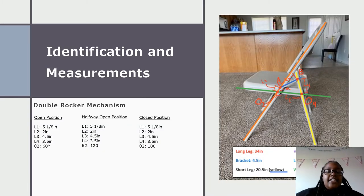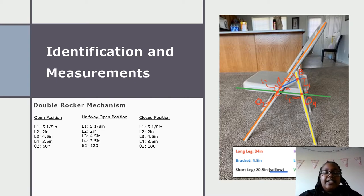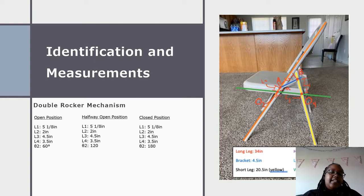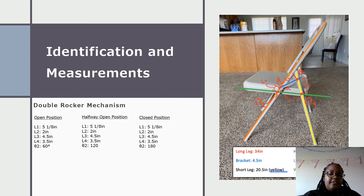Identification and measurements. The folding chair is a double rocker mechanism. In the open position, link one is 5 and 1/8 inches, link two is 2 inches, link three is 4.5 inches, and link four is 3.5 inches. Theta two is 60 degrees. At the halfway open position, theta two is 120. And in the closed position, theta two is 180.